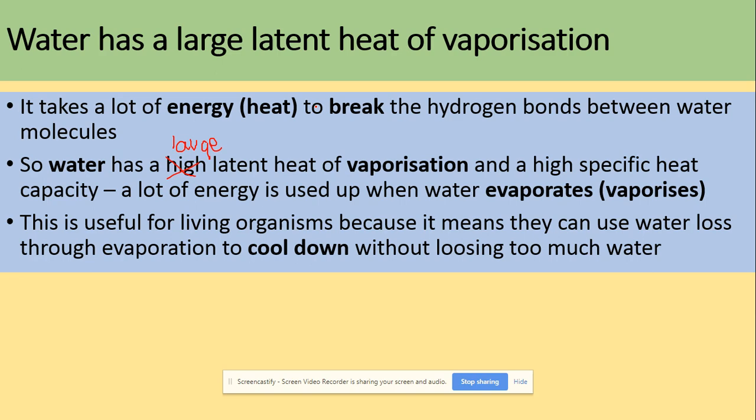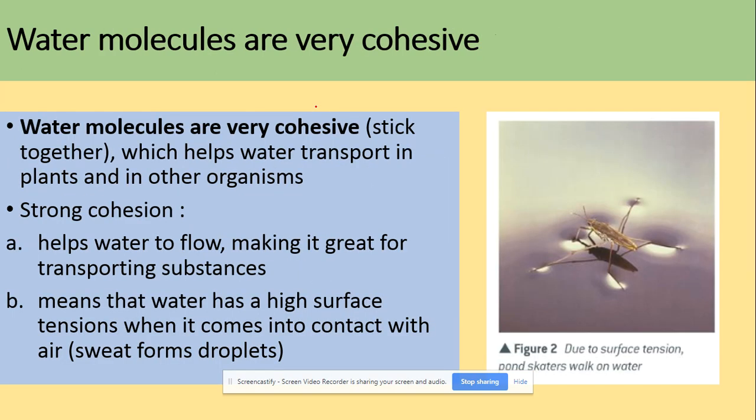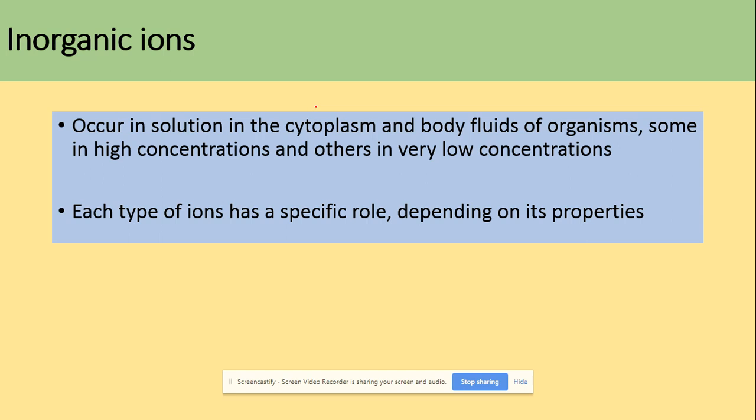Water molecules are very cohesive — they can stick together, which helps water transport in plants and other organisms. Strong cohesion helps water flow, making it great for transporting substances. It also means water has a high surface tension when it comes into contact with air.